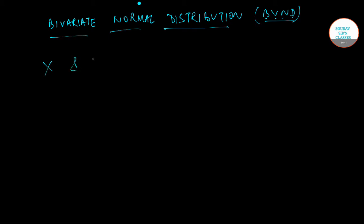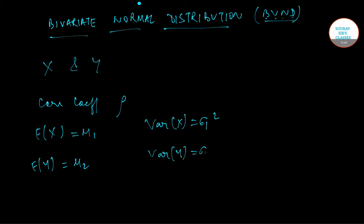Let X and Y be two correlated normal variables with correlation coefficient rho. Expectation of X equals mu_1, expectation of Y equals mu_2, variance of X equals sigma_1 squared, and variance of Y equals sigma_2 squared.